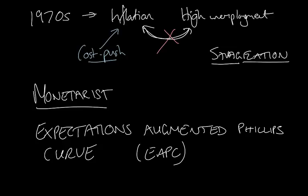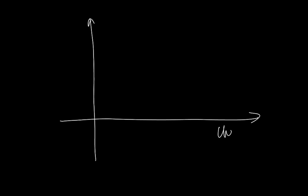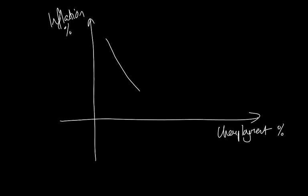Stagflation isn't allowed for in the standard Phillips curve model, so we needed to adapt. What the monetarists came up with was the expectations-augmented Phillips curve — we often shorten that to the EAPC. It's quite a mouthful, so use the full name the first time and then EAPC from then on. The EAPC aimed to explain how you could end up with a period of inflation and unemployment both at the same time. We start from the same sort of diagram: unemployment on the horizontal axis, inflation on the vertical axis, and we start with our short-run Phillips curve.